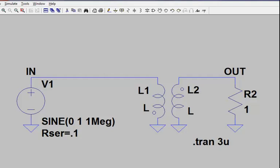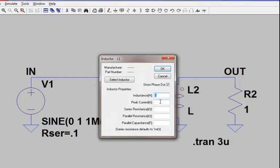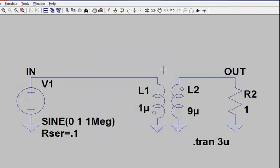So let's say in our example we want a 1 to 3 turns ratio. We square that, we get a 1 to 9 inductance ratio, which now allows us to select 1 microhenry and 9 microhenrys for our two values of inductance for this transformer.